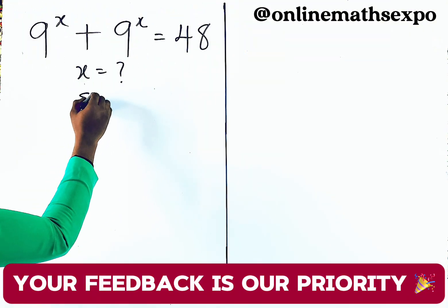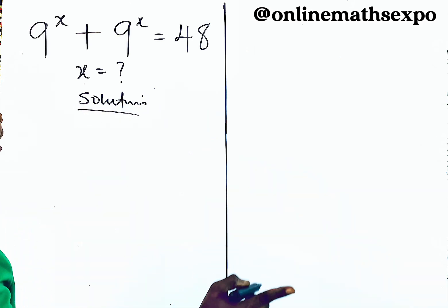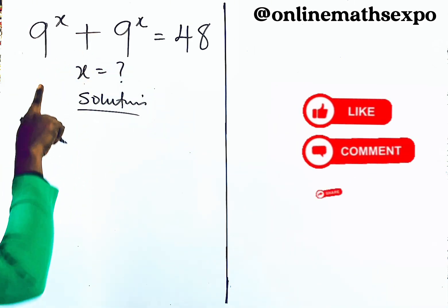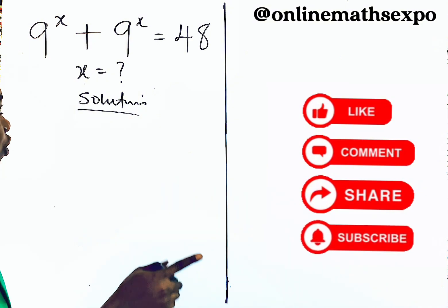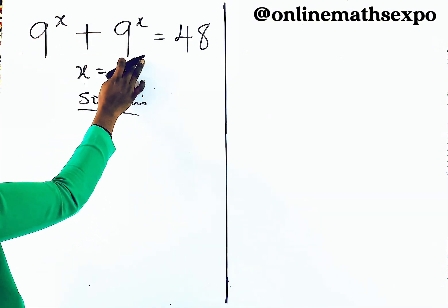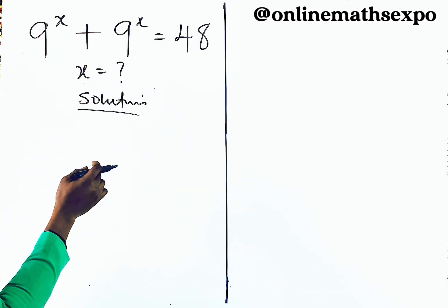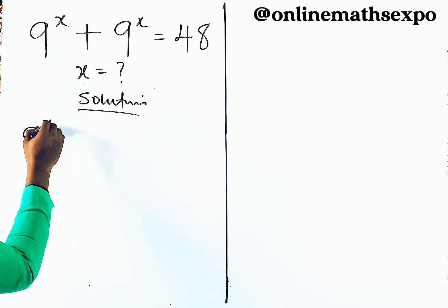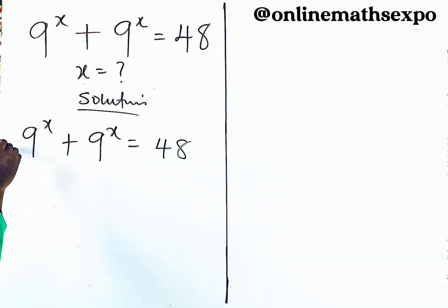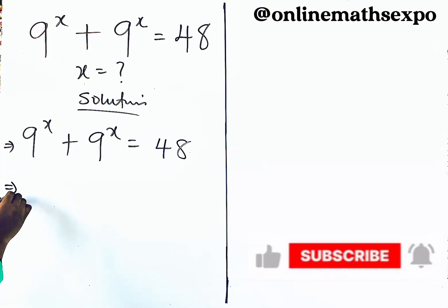We're going to begin with the solution. Now you have to be careful — this sign is addition, it's not multiplication. So in that case, since they are both repeated, we can choose to factor one out.